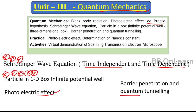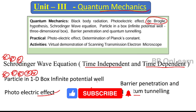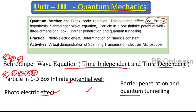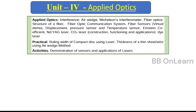Also learn the de Broglie hypothesis. You can learn four questions for 16 marks in this unit. The particle in a one-dimensional box using the Schrödinger wave equation (time-independent) — learn to explain this clearly from an exam point of view. For practicals, learn the photoelectric effect and Planck's constant experiments.